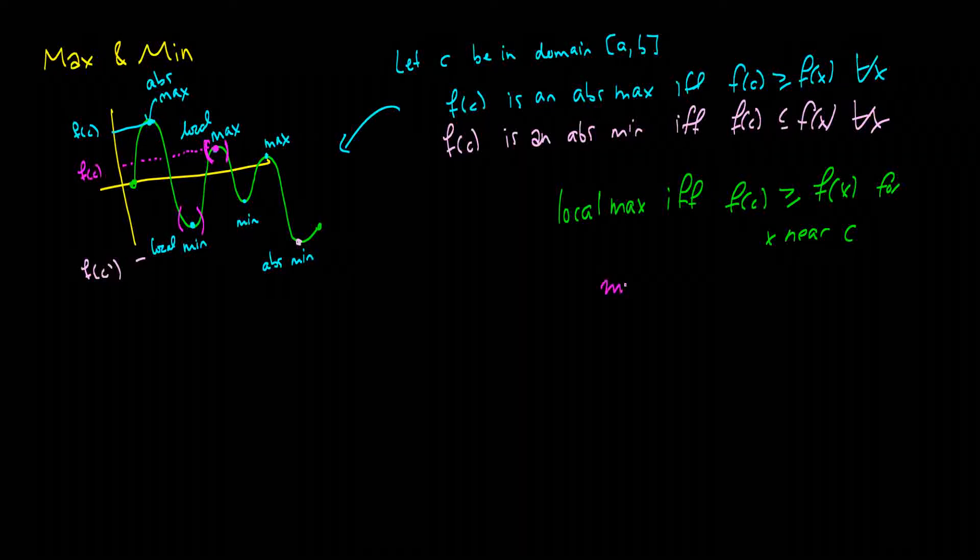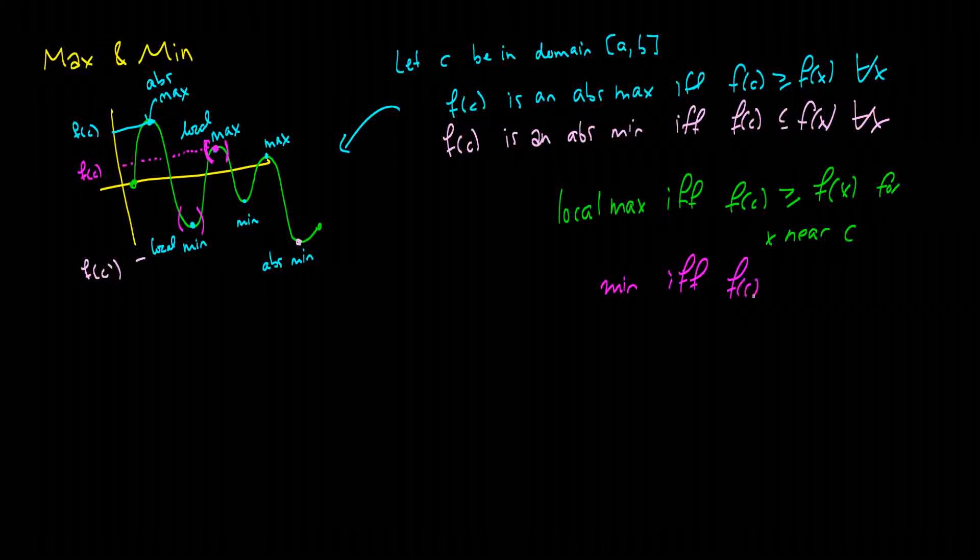And the minimum, by this point, you should be able to guess if F of C is less than or equal to F of X for X near C. So, again, it's very similar arguments, but really a graph is probably the best way to show this thing.